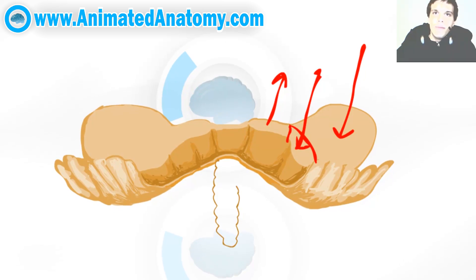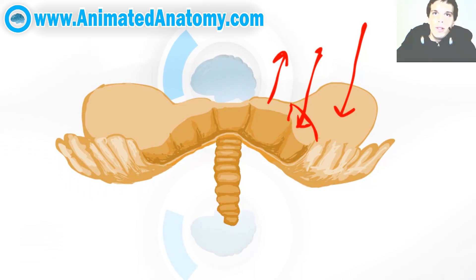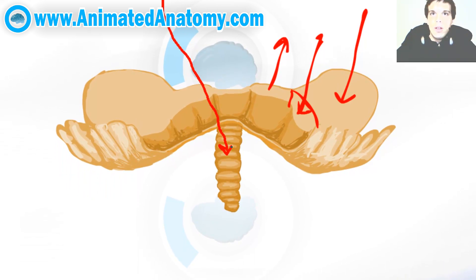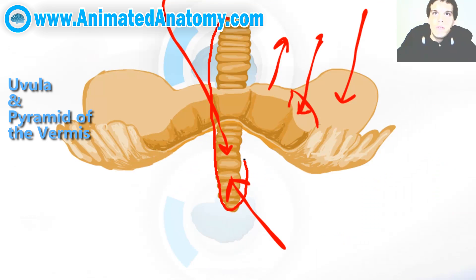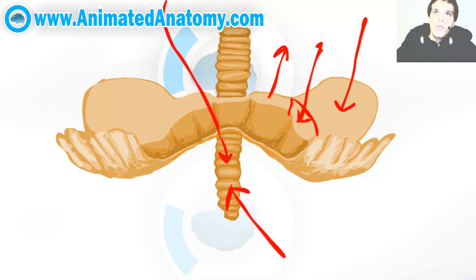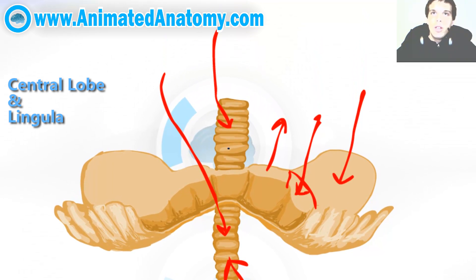Let's draw further. This over here is the uvula, and this over here is the pyramid of the vermis. Let me draw the complete vermis — all of this is the vermis. Up there we have the central lobe and the lingula of the cerebellum. All of that belongs to the vermis.